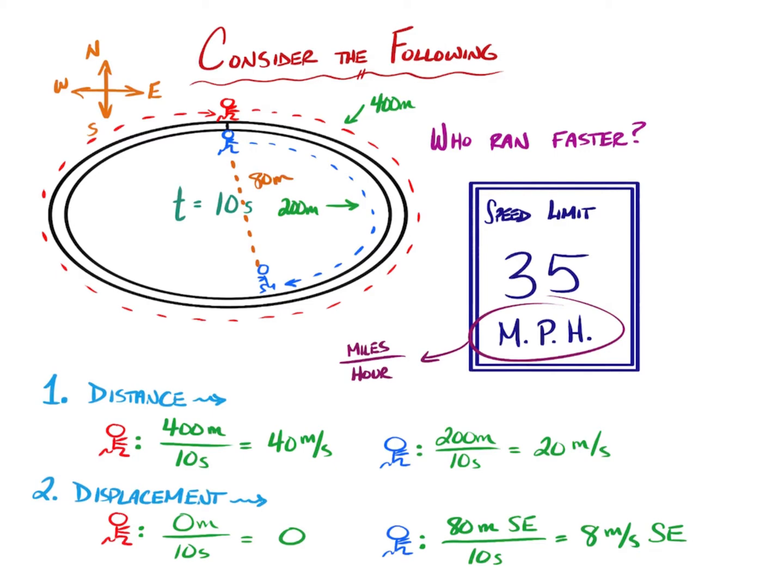So you'll notice here we have four different values for two different people. And I only asked one question. So one of the things we need to realize here is that first calculation that was based on the distance that they traveled.